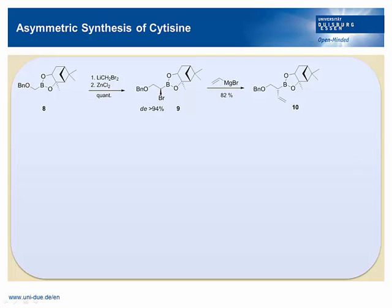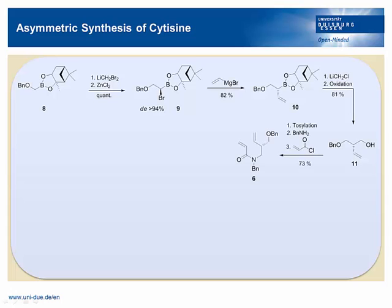A second homologation and subsequent oxidation delivers an alcohol, which is then converted into 6 by a one-pot procedure involving tosylation, nucleophilic substitution, and isolation. Ring-closing metathesis, addition of bromine, and subsequent E1cb elimination brings us to the central building block 4a.